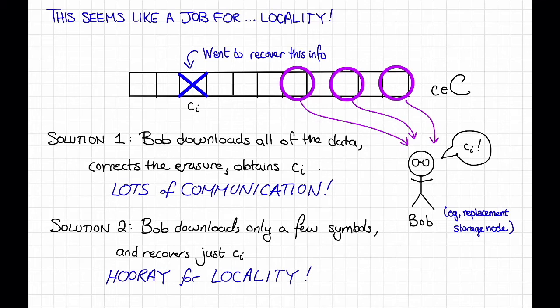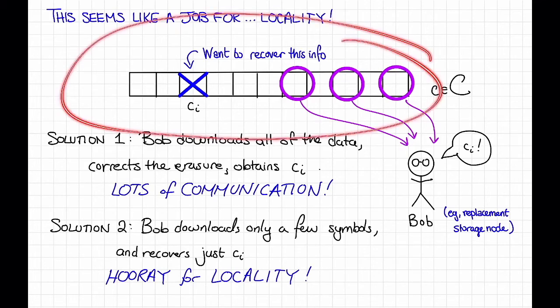So in some sense, this question is a lot easier than the question that locally correctable codes were trying to answer, only a constant number of erasures rather than a constant fraction of errors. And because of that, we might hope to do better. So we could use a locally correctable code, but the examples of locally correctable codes that we saw didn't have awesome rate. So we might hope to get much better rate and still be able to perform this task.